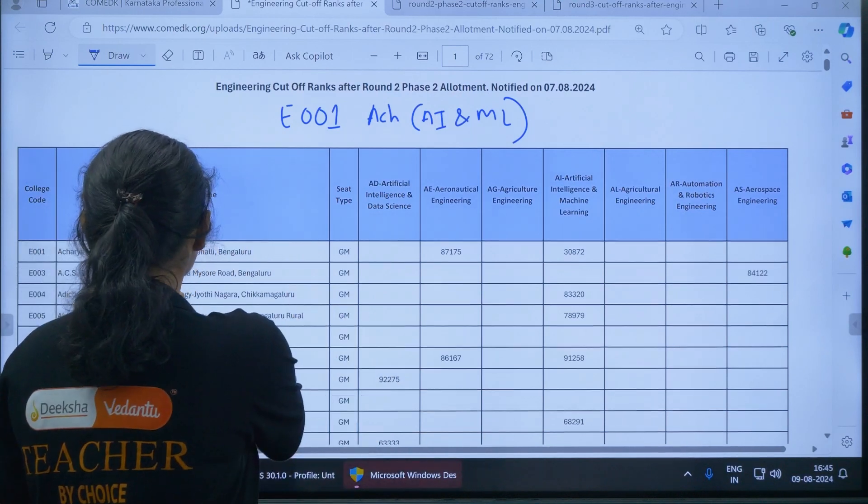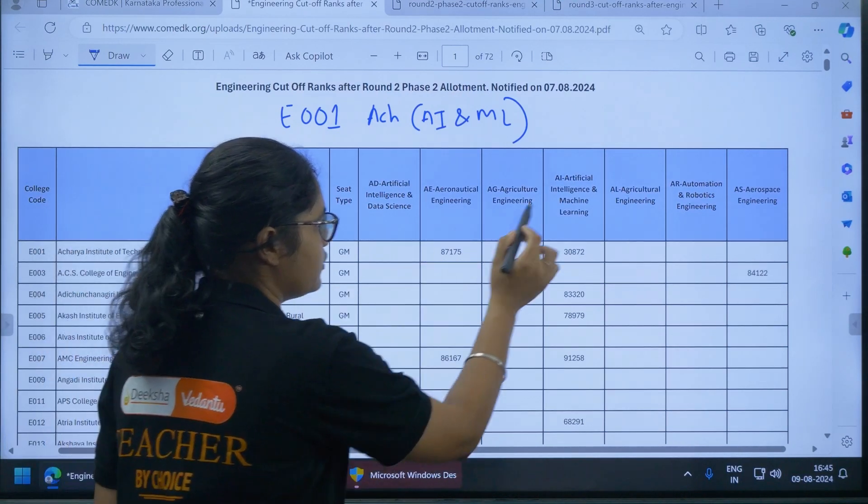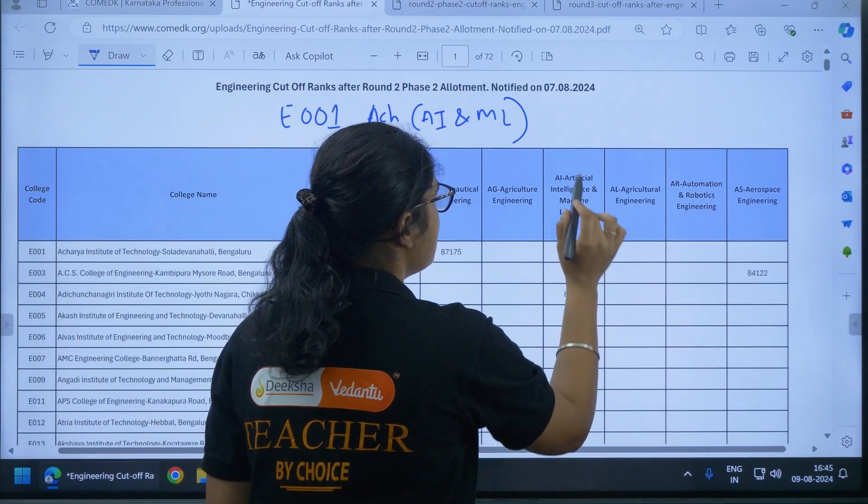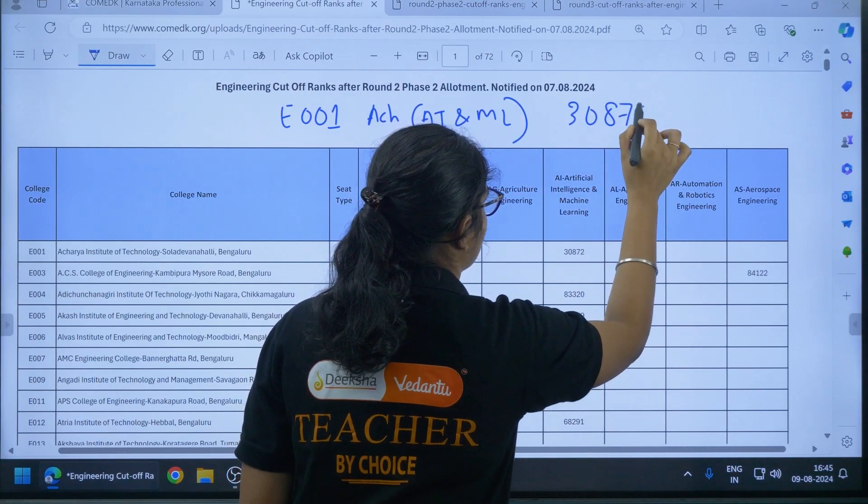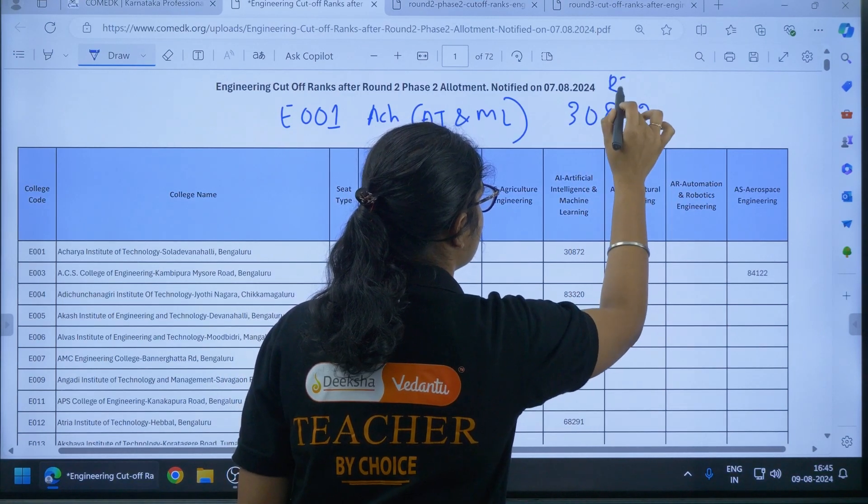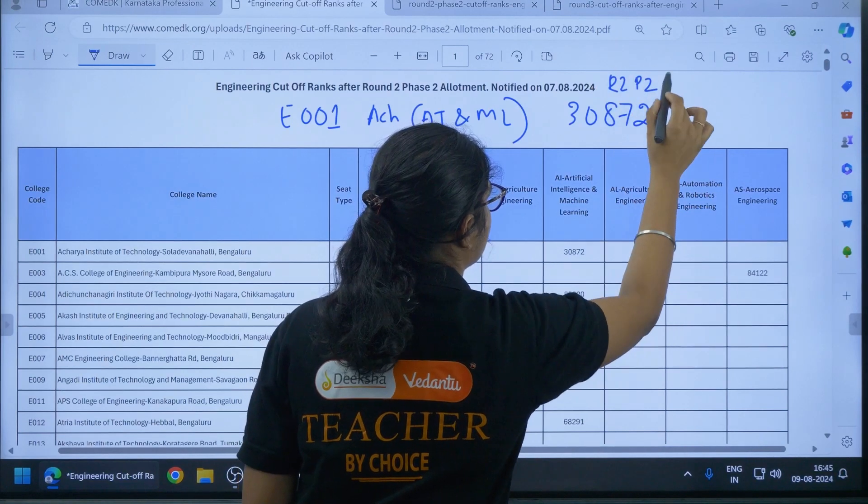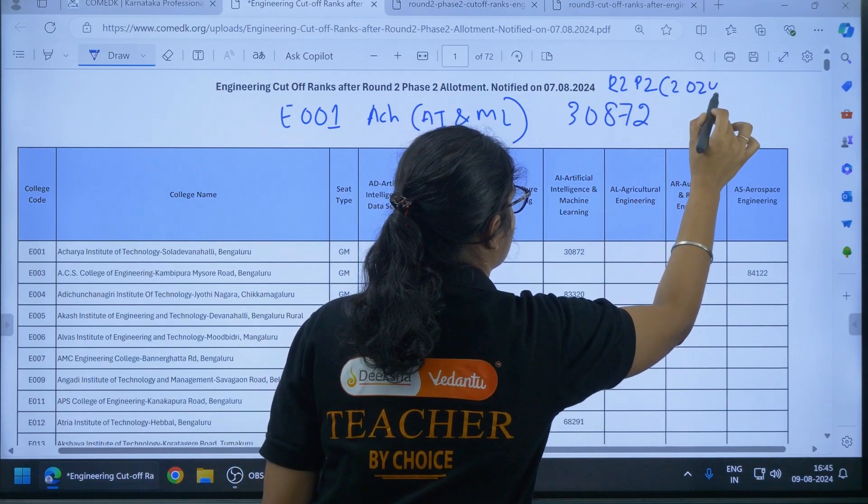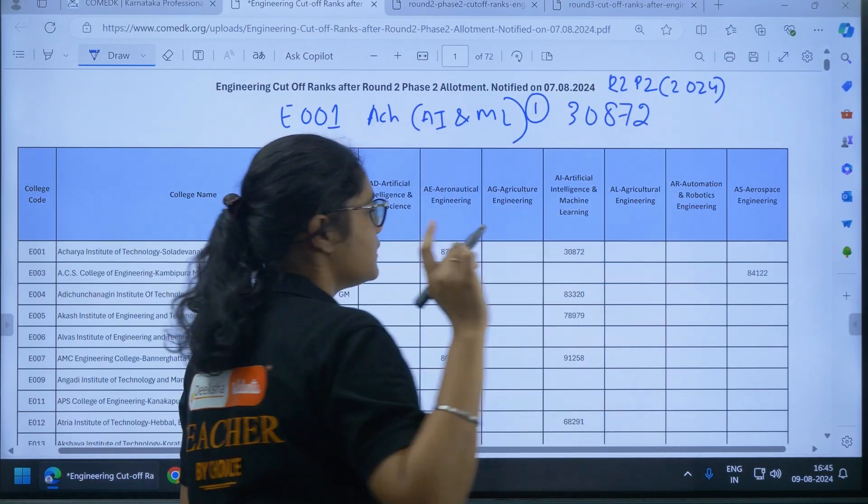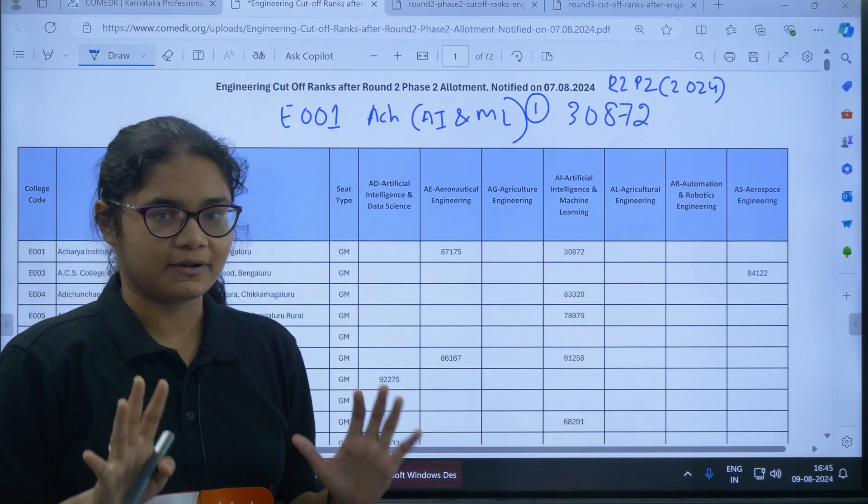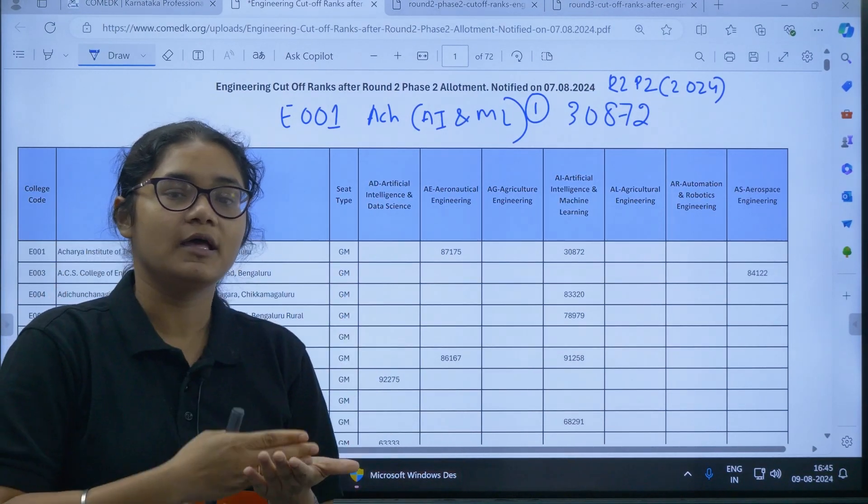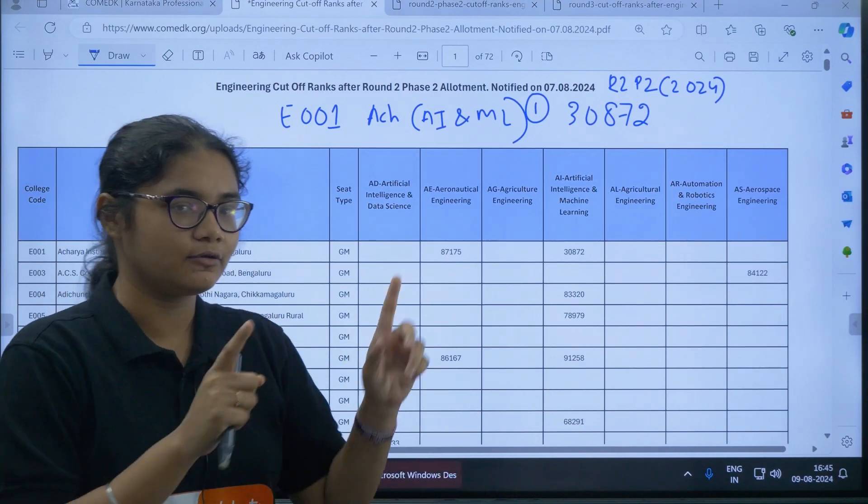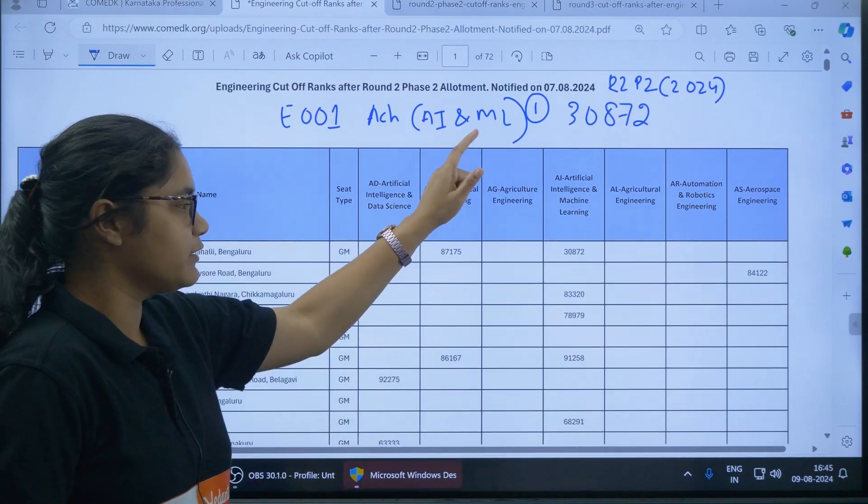So if you see for Acharya Institute of Technology Bangalore, Artificial Intelligence and Machine Learning, the cutoff is 30,872. This is in Round 2 Phase 2 for 2024. Step 1, you have to check this for your first preference, whichever preference you wish to join or you like. You want that college, for that you have to do these same steps.